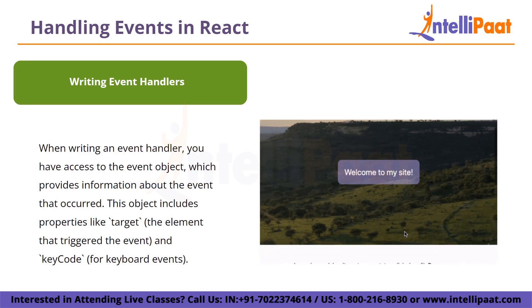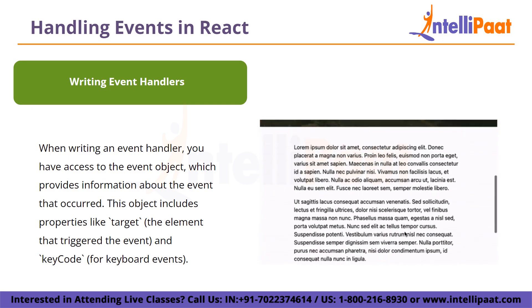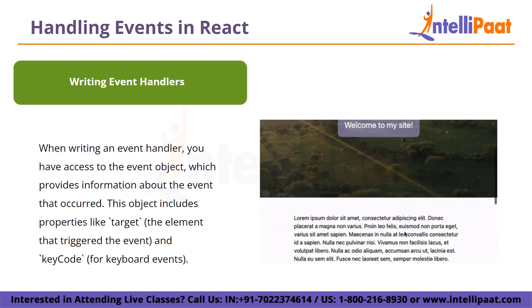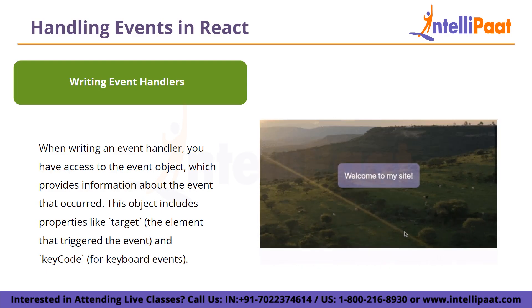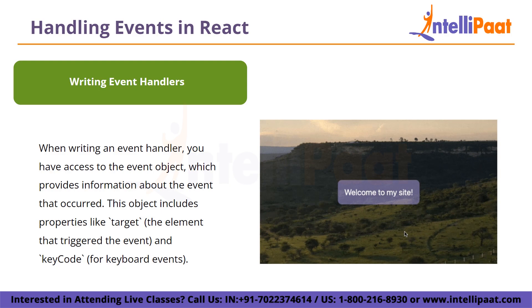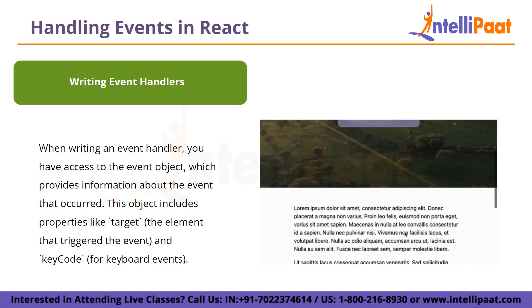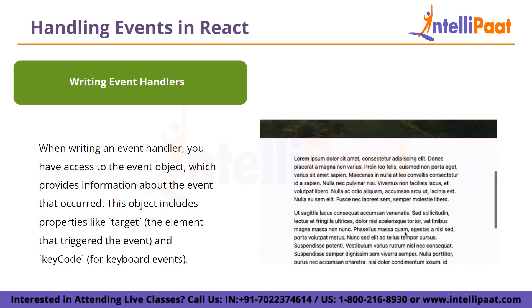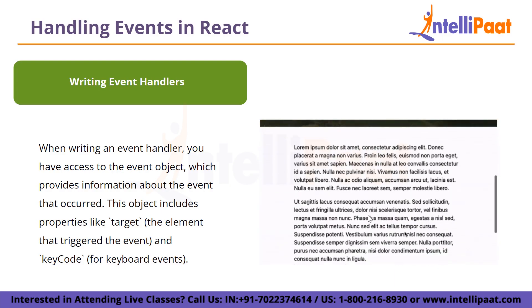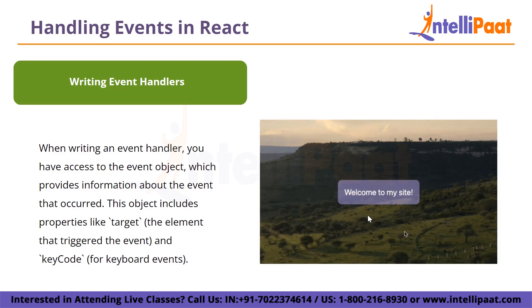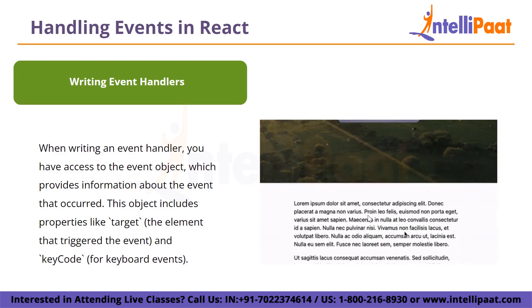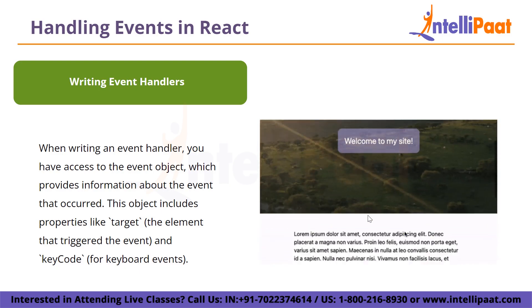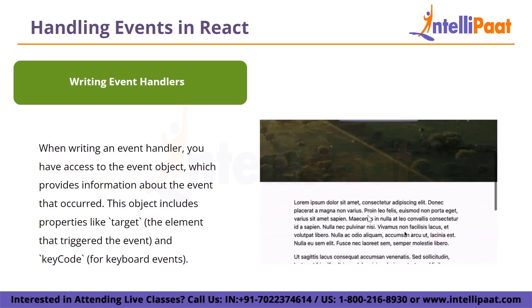When writing an event handler, you have access to an event object which provides information about the event that has occurred. This can include properties like target — the element that triggered the event — and key code for keyboard events. To handle events in React, you will typically define event handler functions within your component's code. These functions should be passed as props to the corresponding elements that need to respond to user interaction.